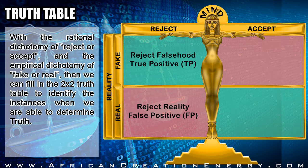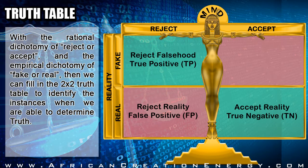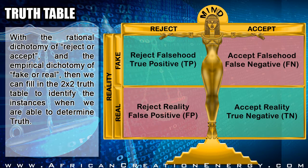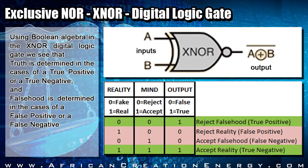If we encounter information that is actually real and our mind accepts it, that is an example of a true negative — another instance where our mind has made a correct determination in accepting reality. However, if we encounter information that is actually fake and our mind accepts it, that is an example of a false negative, because our mind has made an incorrect determination to accept falsehood. These four conditions of the truth table can be taken as the input to the digital logic gate called an exclusive NOR, also called an XNOR.